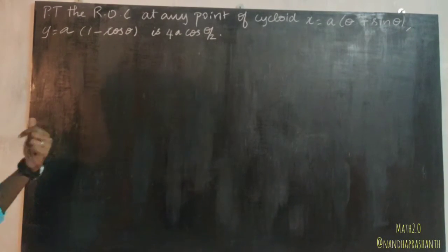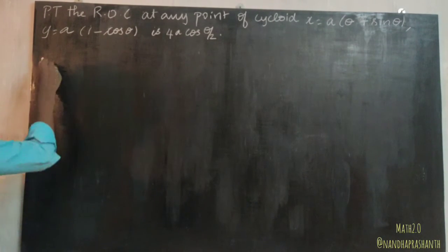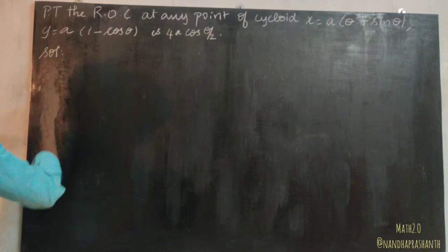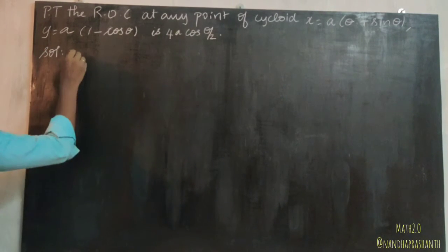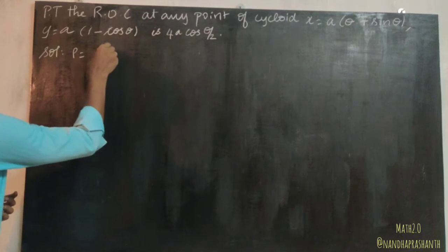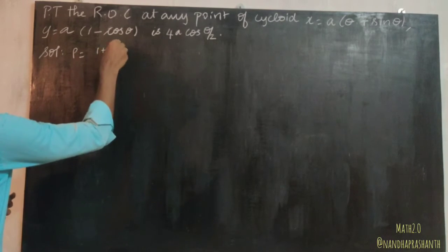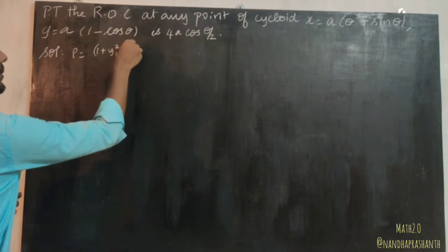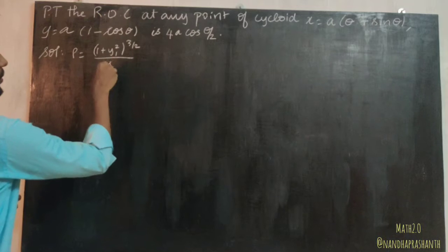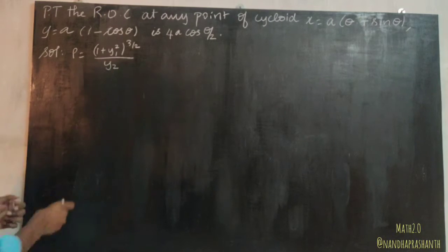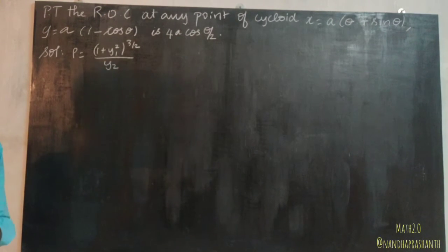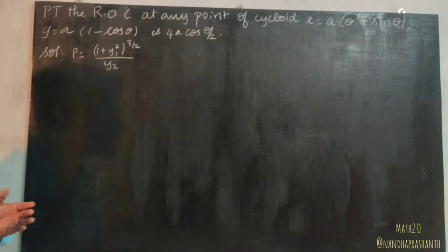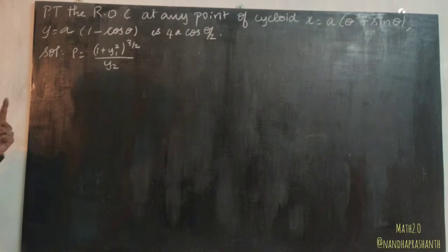To prove this, the radius of curvature formula is: ρ = (1 + y₁²)^(3/2) divided by y₂, where y₁ is the first derivative of the curve and y₂ is the second derivative of the curve.